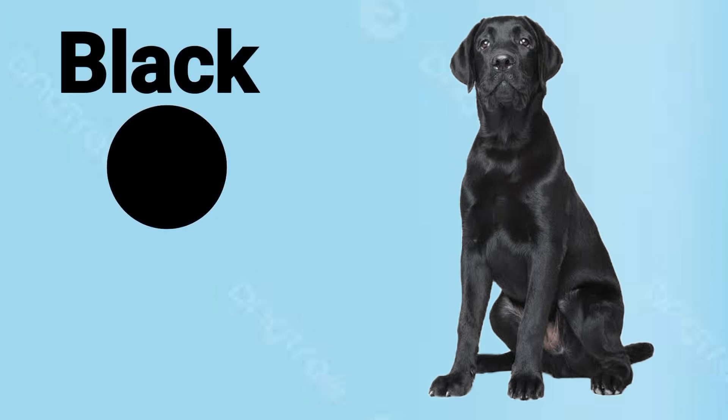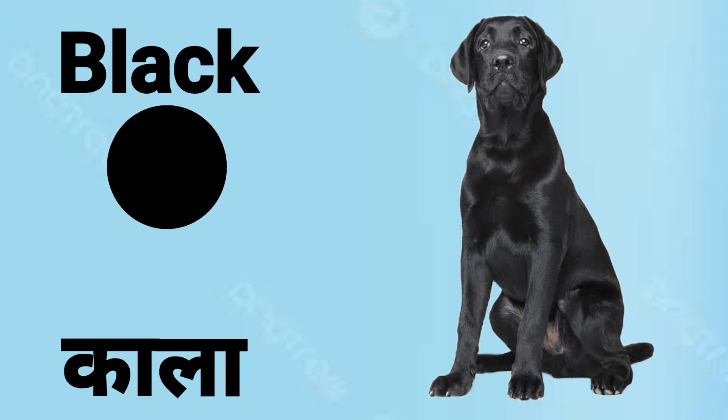What is the colour of a dog? Black. Black means Kala.